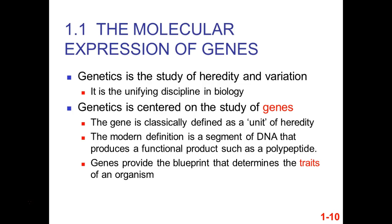Our genes are the blueprint — just like contractors use engineers' blueprints to build a house, how you're going to build a body is encoded in our DNA. What color hair will you have? Is it going to be curly or wavy? Are you going to have freckles? But just because it's encoded in your DNA doesn't mean it'll always be expressed. My freckles don't start coming out until I get in the sun, right? So we're not just our DNA alone — we're also affected by the environment.